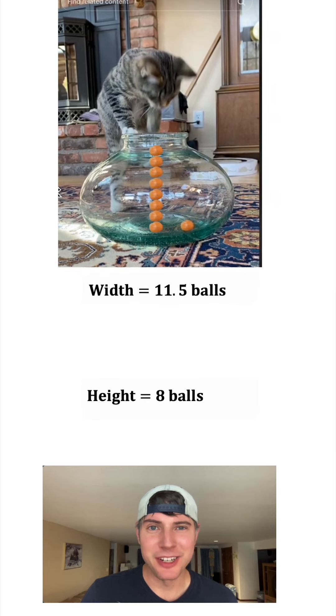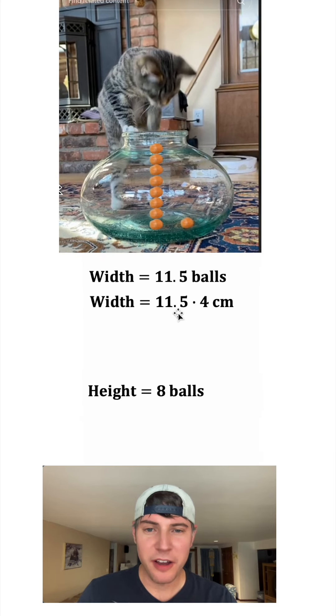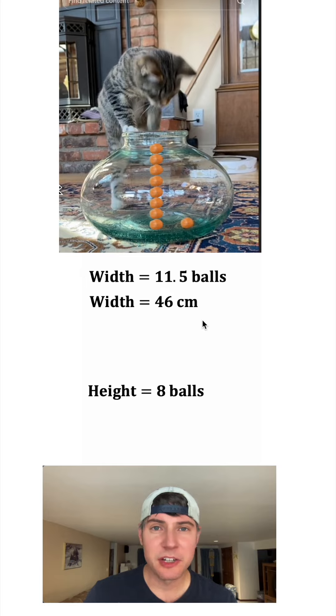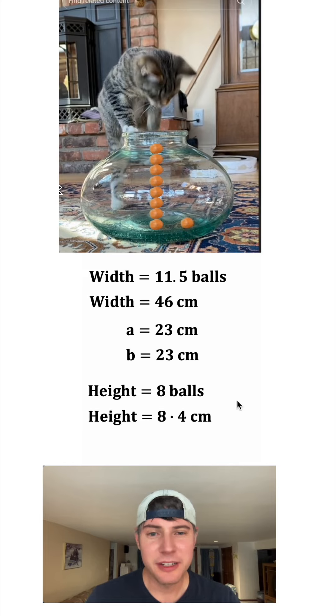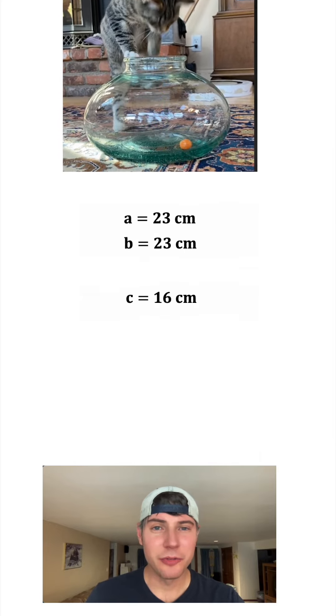So now let's figure out what it is in centimeters. The width is going to be 11.5 balls times 4 centimeters each. So it's going to be 46 centimeters all the way across. And A and B will be half that, so they're going to be 23 centimeters each. And then for the height, we can take the 8 balls and multiply that times 4, and we get 32 centimeters. And then C will be half of that, which is 16.